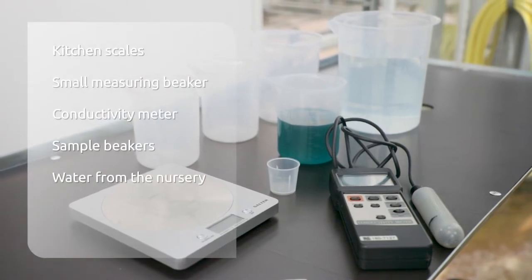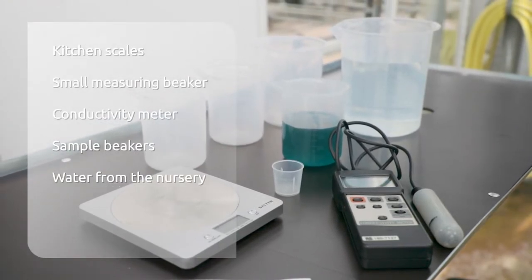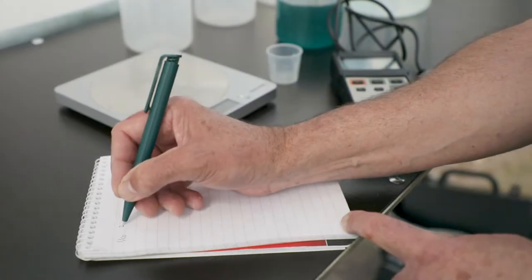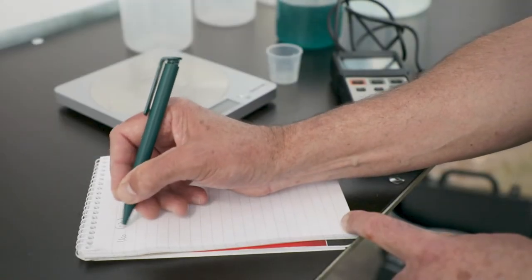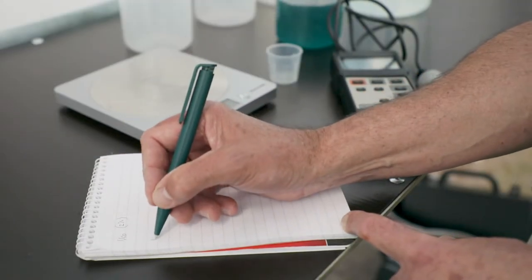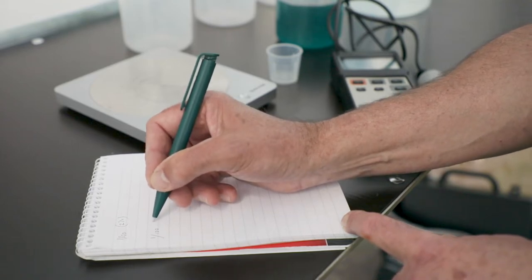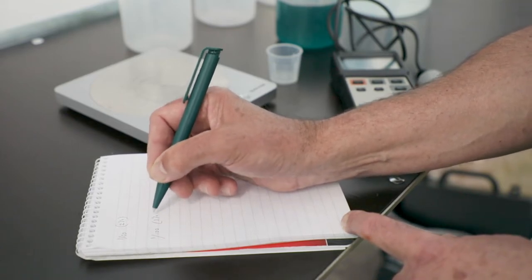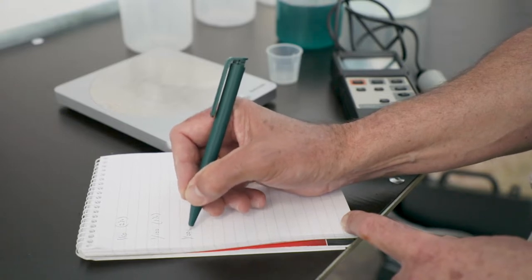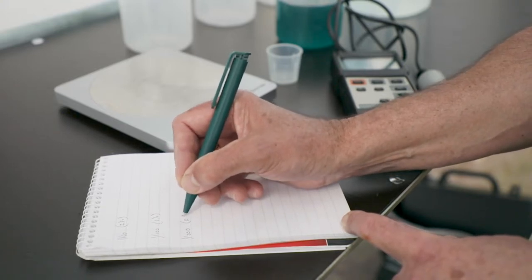We're going to check how effective the proportional diluter is to make sure it's giving the correct output conductivity. So we're going to start with a one in fifty dilution which is two percent, one in one hundred dilution one percent and one in two hundred dilution point five percent.